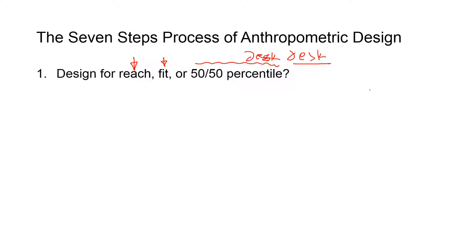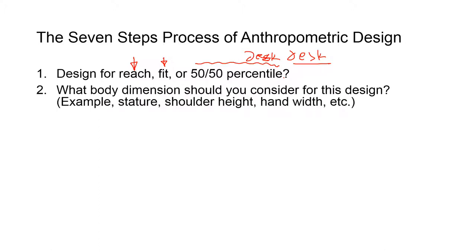Once you figure out what type of design it is - design for reach, design for fit, or design for 50/50 percentile - after that you're trying to figure out the body dimension appropriate for that particular design. For example, door height, then you use the stature height. Now this word looks like some of my students really didn't have any clue what that word means. They're probably not used anymore.